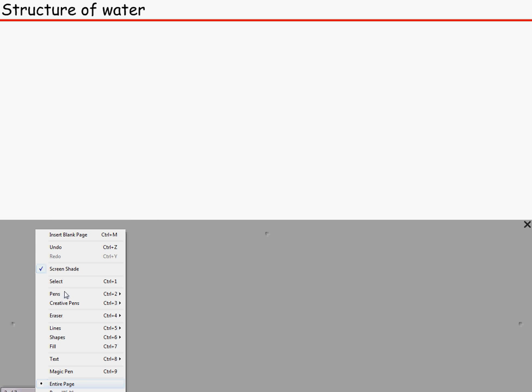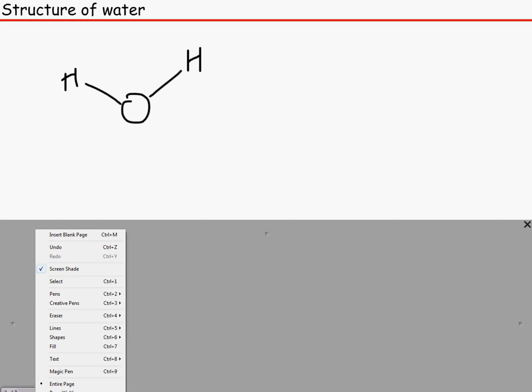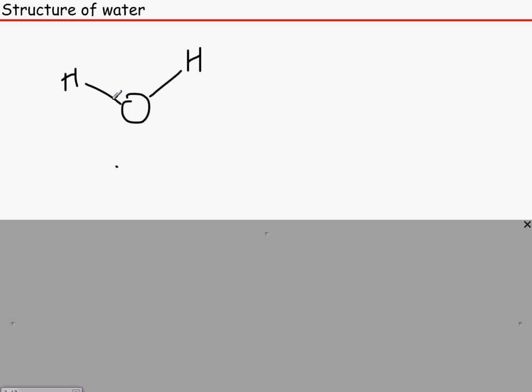So to draw it, we know that water has got oxygen, hydrogen and another hydrogen atom. We know that if you do chemistry, you'd know that this is 104.5 degrees.